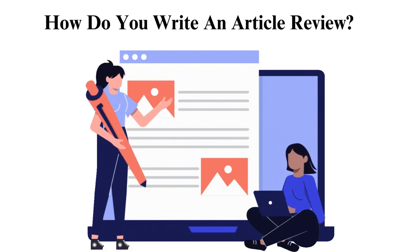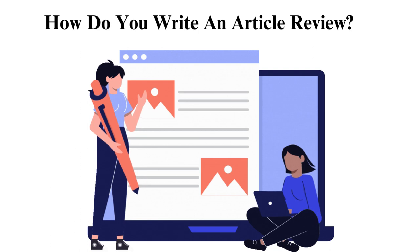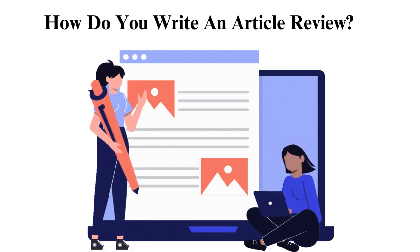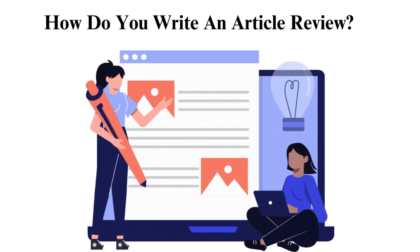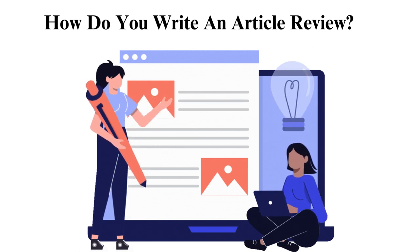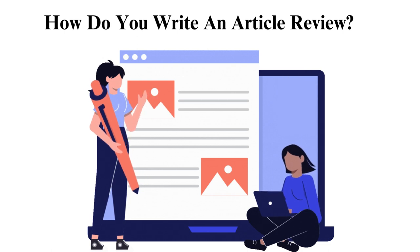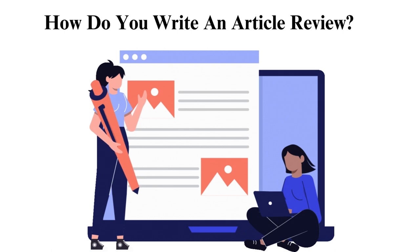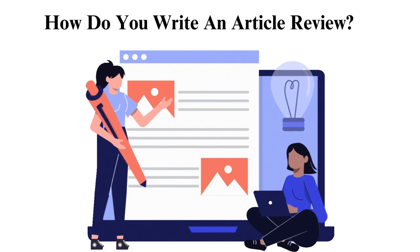Second, understand the definition. To avoid making errors and fulfilling all the requirements expected of an article review, it is important to understand how it works. For one, it does not present your opinion, especially for the systematic review and meta-analysis. It also evaluates the research done and simply responds to the original document.